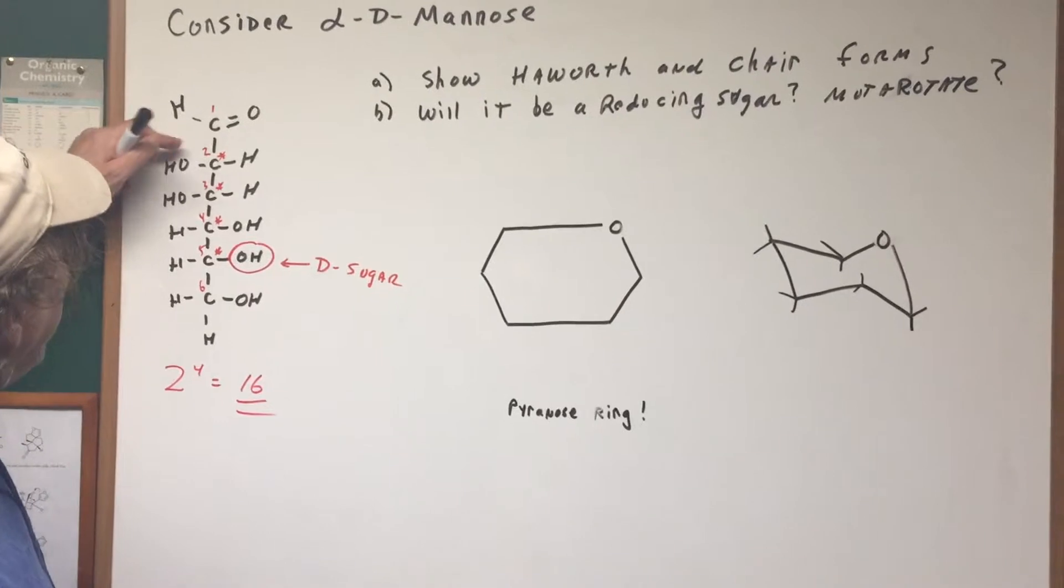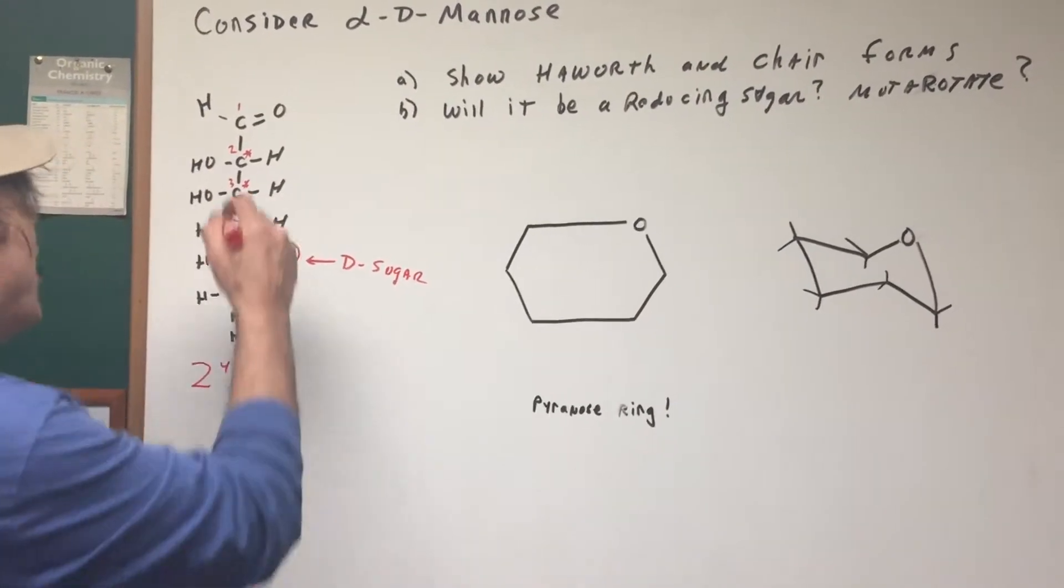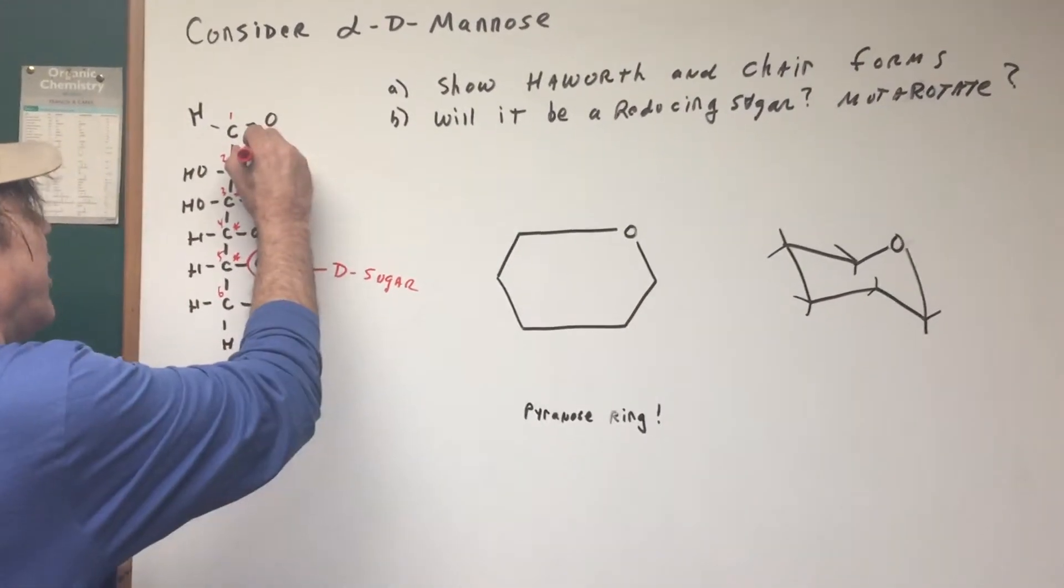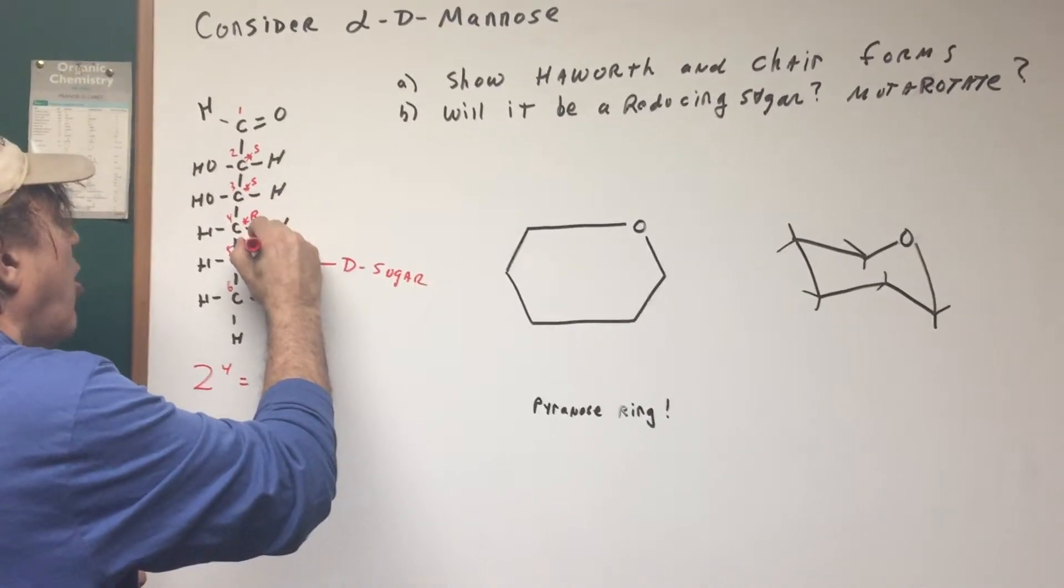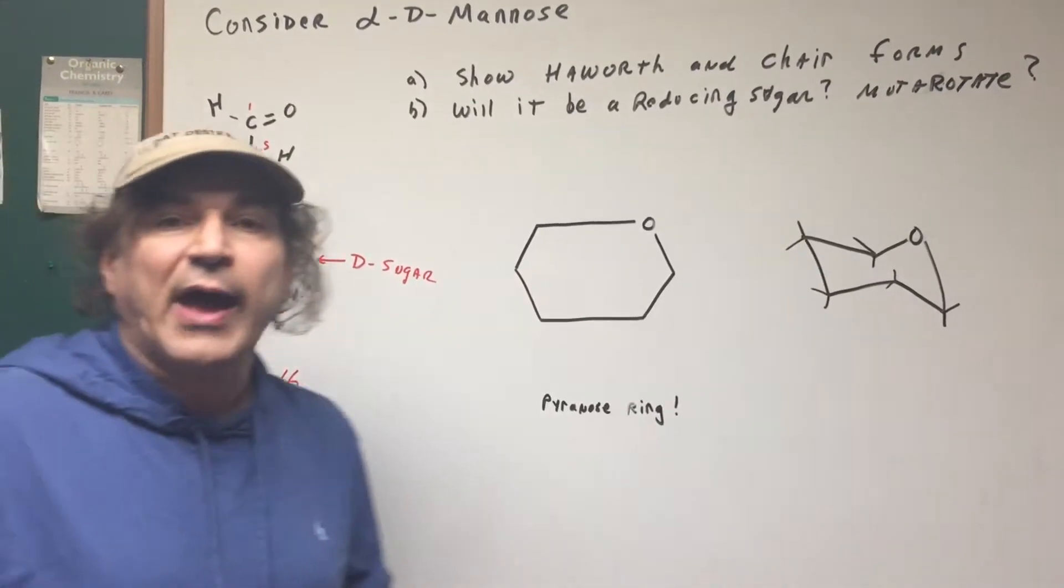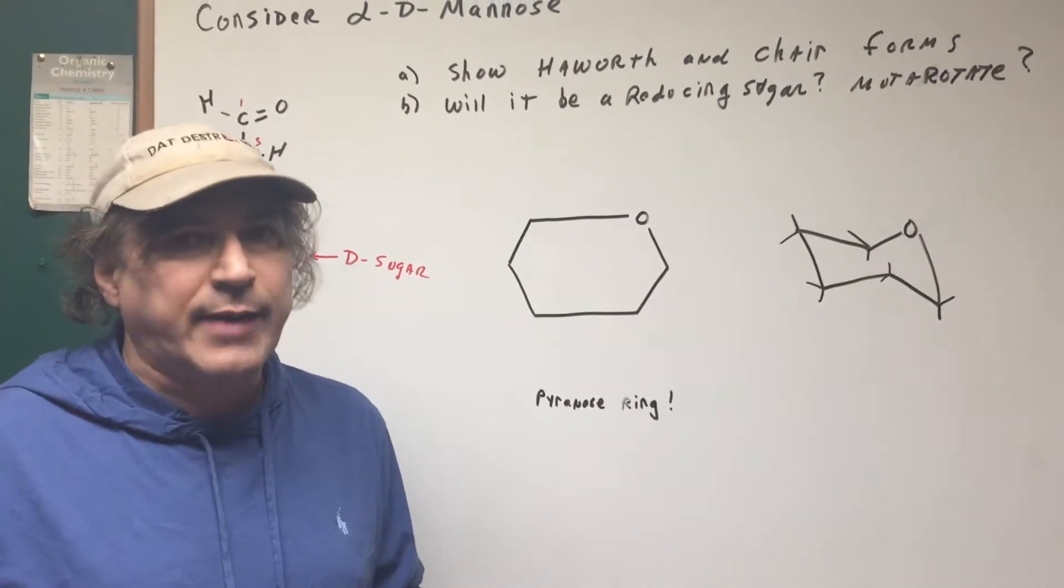And for sugars, if the OH is on the left side, it would have an S configuration. So this is an S, this is an S, this is an R, and this is an R. That's a gem for the DAT that you can hit that at landing speed.